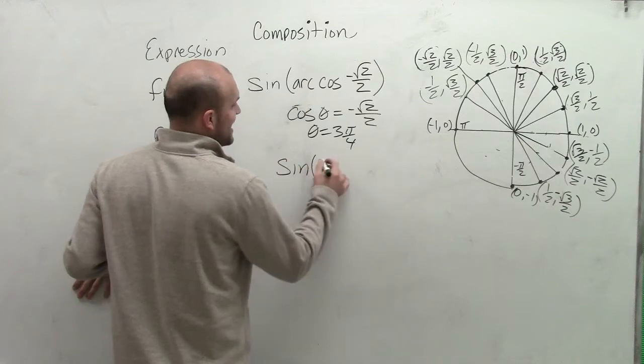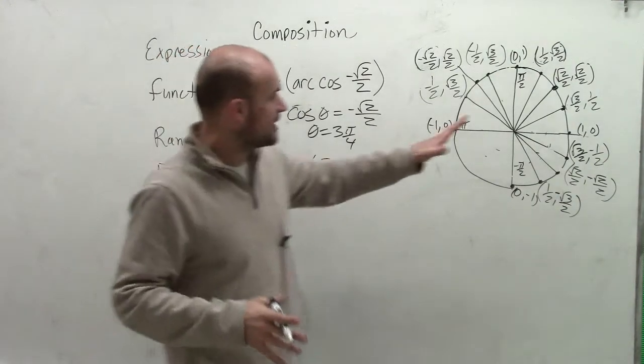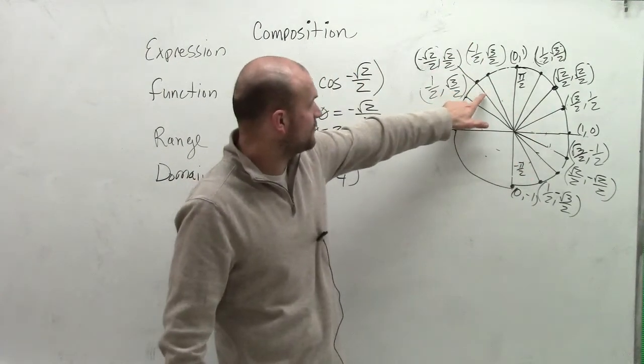that evaluation, I'm now going to take sine of 3 pi over 4. So now when looking at the sine of my 3 pi over 4,